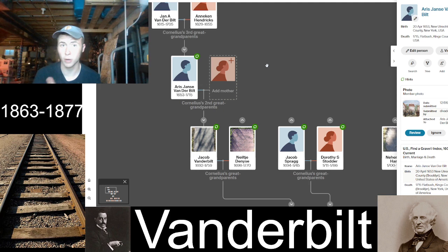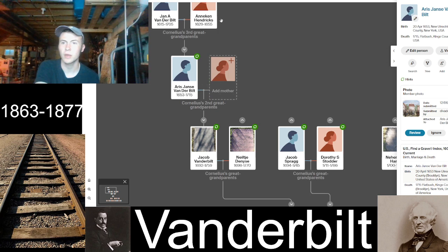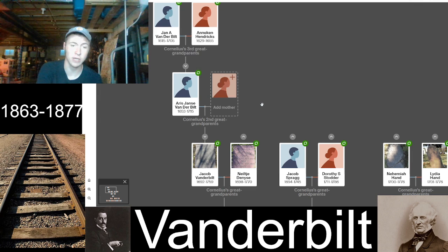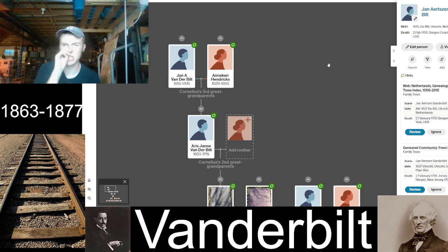'Van der' is Dutch, and Aris Jans van der Bilt was born in New Utrecht, Kings County, New York in 1653, dying around 1715 in Flatbush, New York. His father, Jan Aris van der Bilt, was born in 1615 in De Bilt, Utrecht, the Netherlands — that's where you get the Dutch origin — and he eventually died in 1705 in New Jersey.